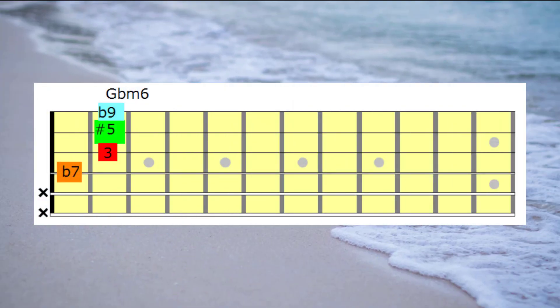Using the G flat minor 6th chord shape that you see on the screen, let's go through every note and see their relationship to F7. The G flat is the flat 9th, D flat is the flat 13th or sharp 5th, A is the 3rd and E flat is the flat 7th.